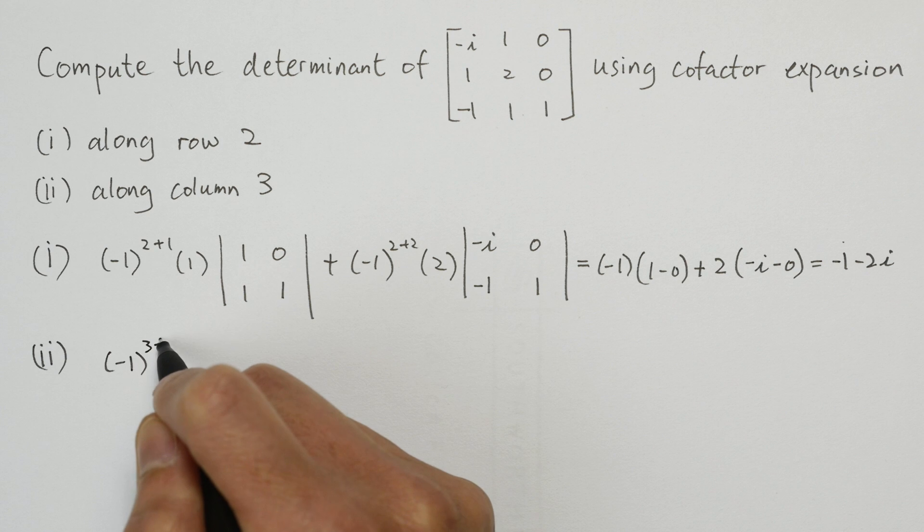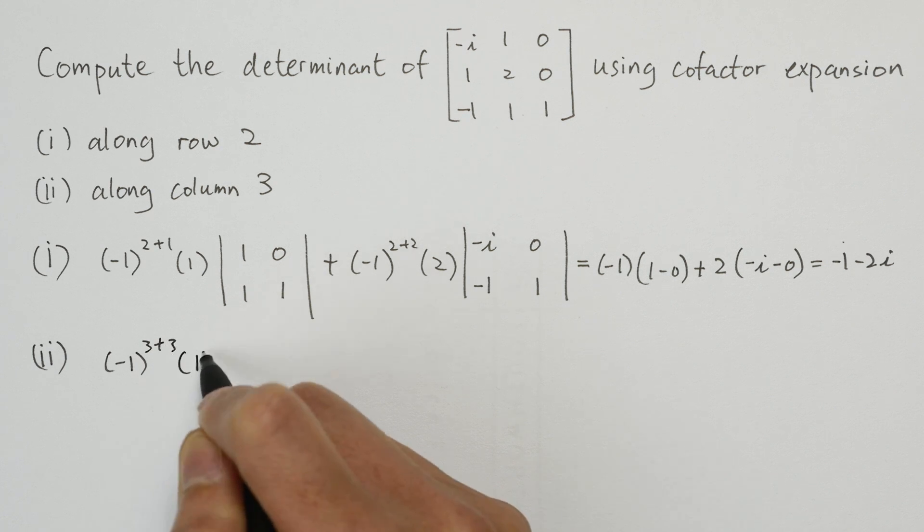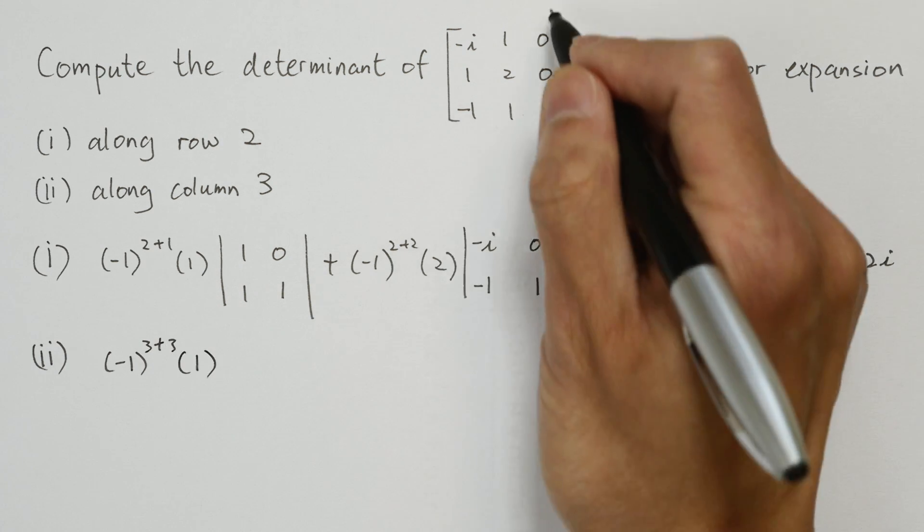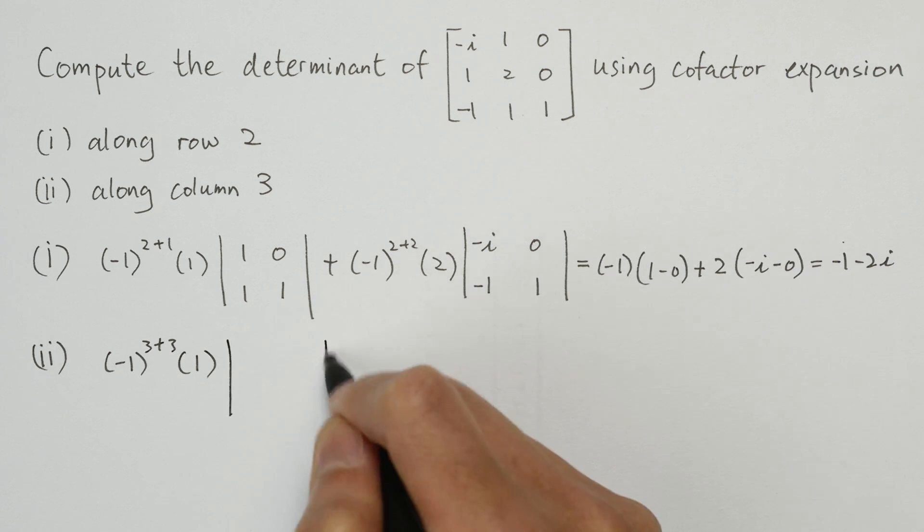It's given by minus 1 to 3 plus 3, times the element itself, times the determinant of the matrix with row 3 and column 3 removed.